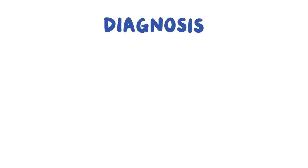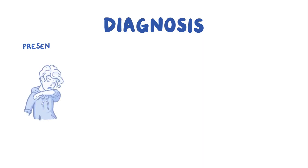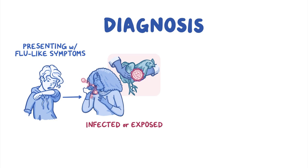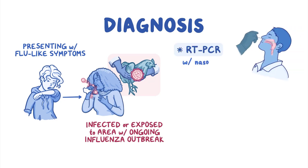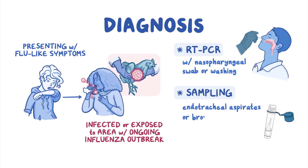Diagnosis of zoonotic influenza should be considered if a patient presenting with flu-like symptoms has been exposed to a person known to be infected, or exposed to birds or pigs in an area with an ongoing avian or swine influenza outbreak — particularly an area with ongoing transmission from domestic poultry or pigs to humans. Lab diagnosis is done using RT-PCR from a nasopharyngeal swab or washing. Patients with lower respiratory tract illness can have samples taken from endotracheal aspirates or bronchoalveolar lavage fluid. Throat swabs may be used if other recommended specimens cannot be obtained.